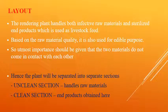Regarding the layout of the rendering plant: the plant handles both infective raw materials and sterilized end products used as livestock feed. Sometimes very good quality materials are processed for edible purposes in a separate rendering unit. Utmost importance should be given so that the two materials do not come into contact — there should be no cross contamination between infective raw materials and safe, sterilized finished materials. For this reason, the plant is strictly divided into two parts: the unclean section and the clean section. The unclean section handles infective raw materials; the clean section handles end products after processing.